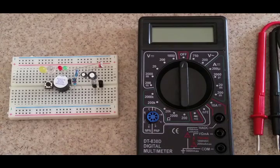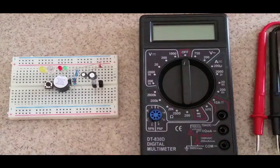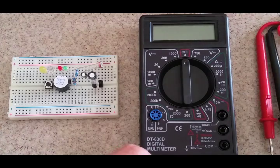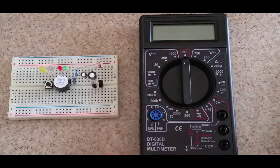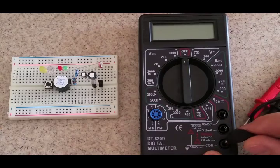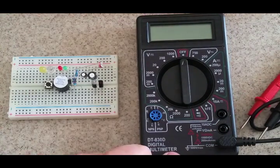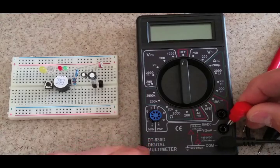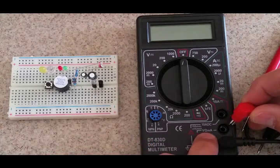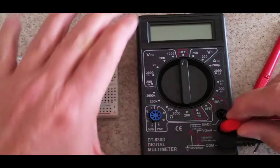So first thing we want to do is take our multimeter and plug in the probes. The black one we'll put in the bottom where it says common or negative. The red one we'll plug into where it says volt ohm milliamp, this middle hole.